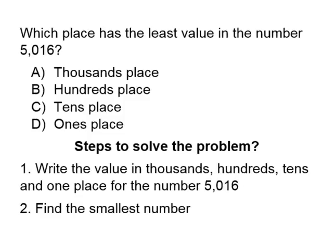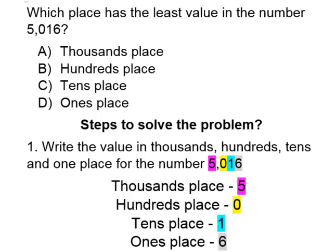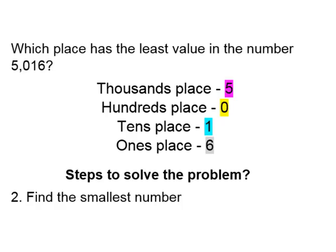Our steps to solve the problem: number one, we are going to write the values for the thousands place, hundreds, tens, and ones place. When we write the values in, we see that in the thousands place we have a 5, hundreds place a 0, tens place a 1, and ones place a 6. The second step is finding the smallest number — which place has the smallest number?